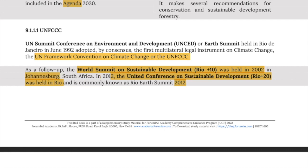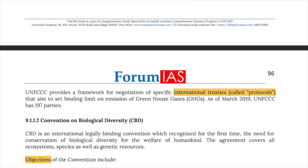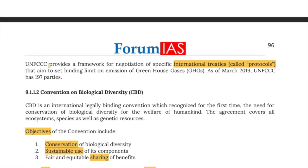In 2012, the United Nations Conference on Sustainable Development, that is Rio+20, was held in Rio and is commonly known as Rio Earth Summit 2012. UNFCCC provides a framework for negotiation of specific international treaties called protocols that aim to set binding limits on emissions of greenhouse gases. As of March 2019, UNFCCC has 197 parties.